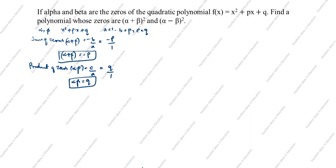Next, the zeros of the required polynomial are (α+β)² and (α-β)². So we need to find the sum and product of these two zeros.